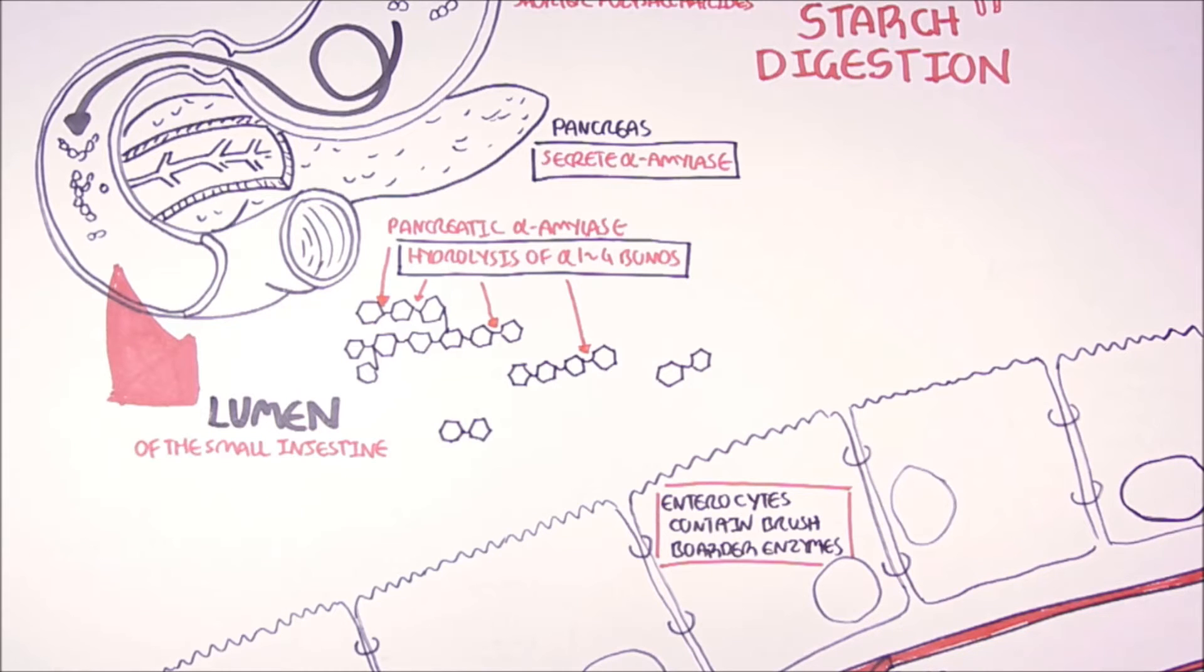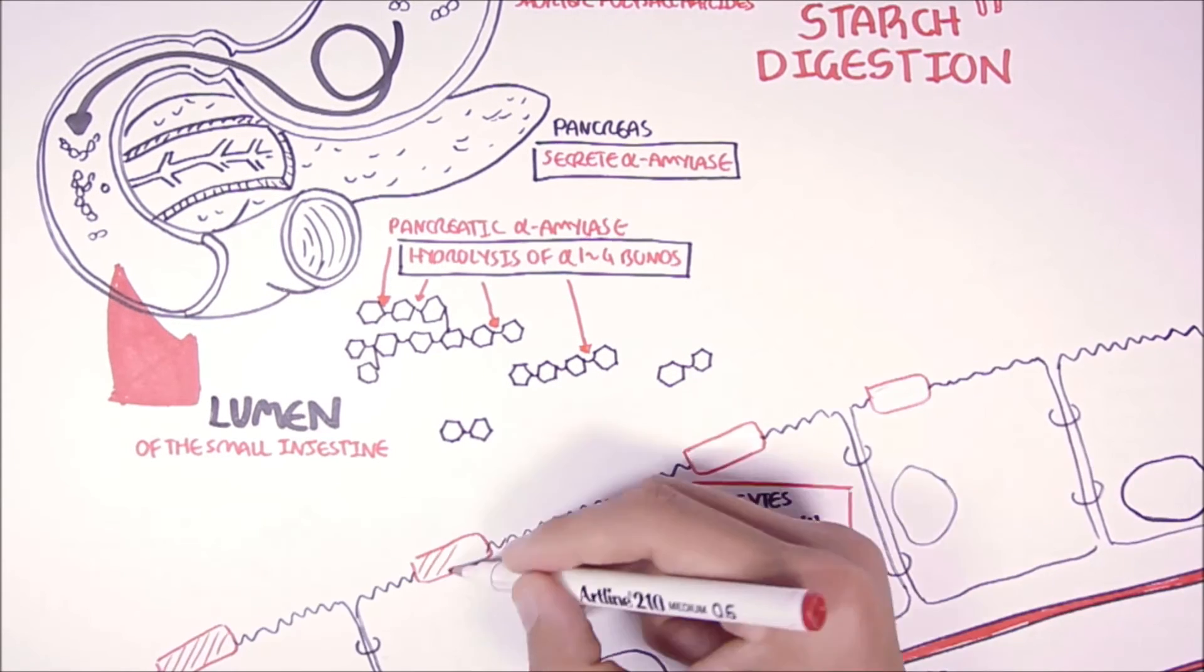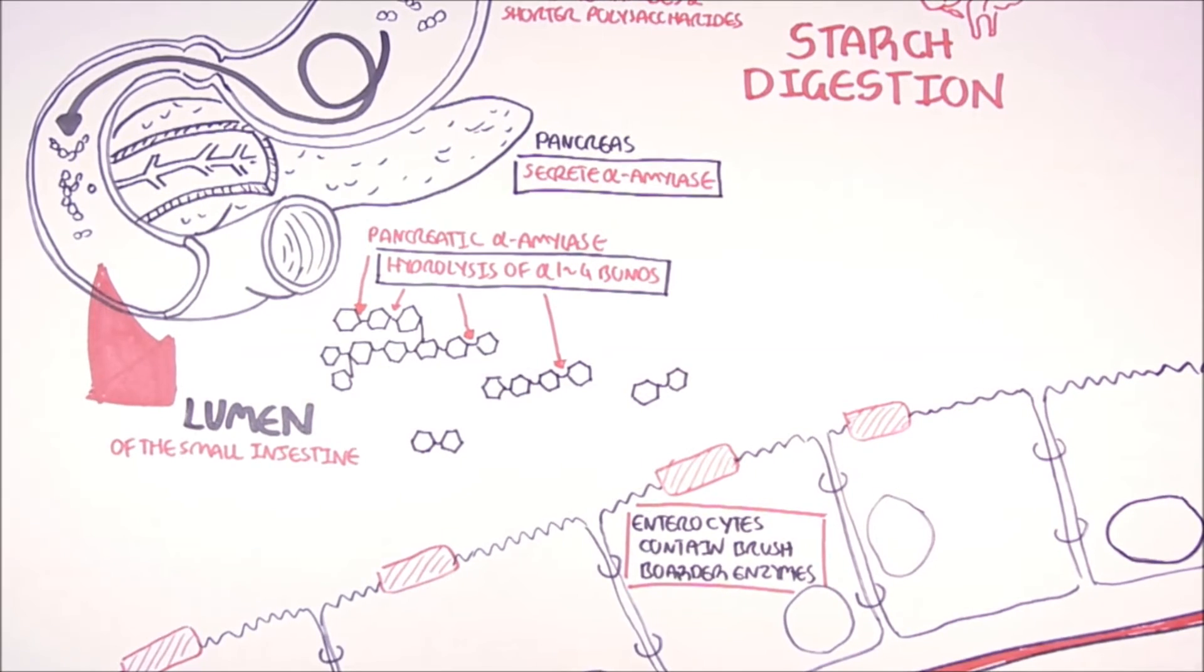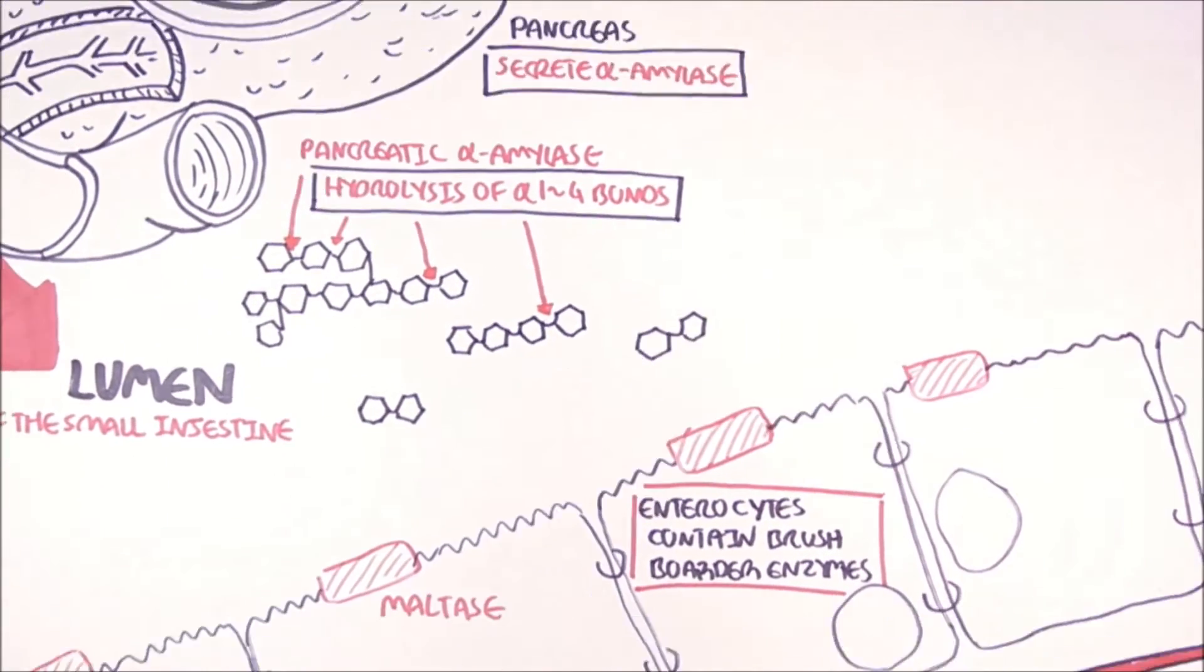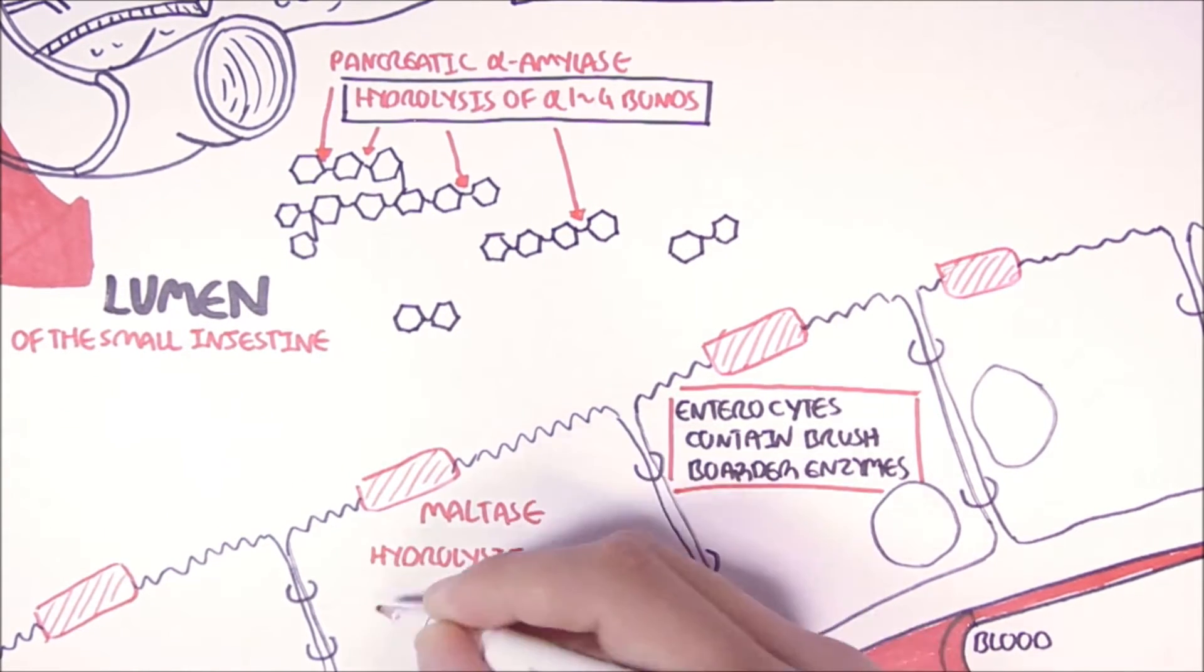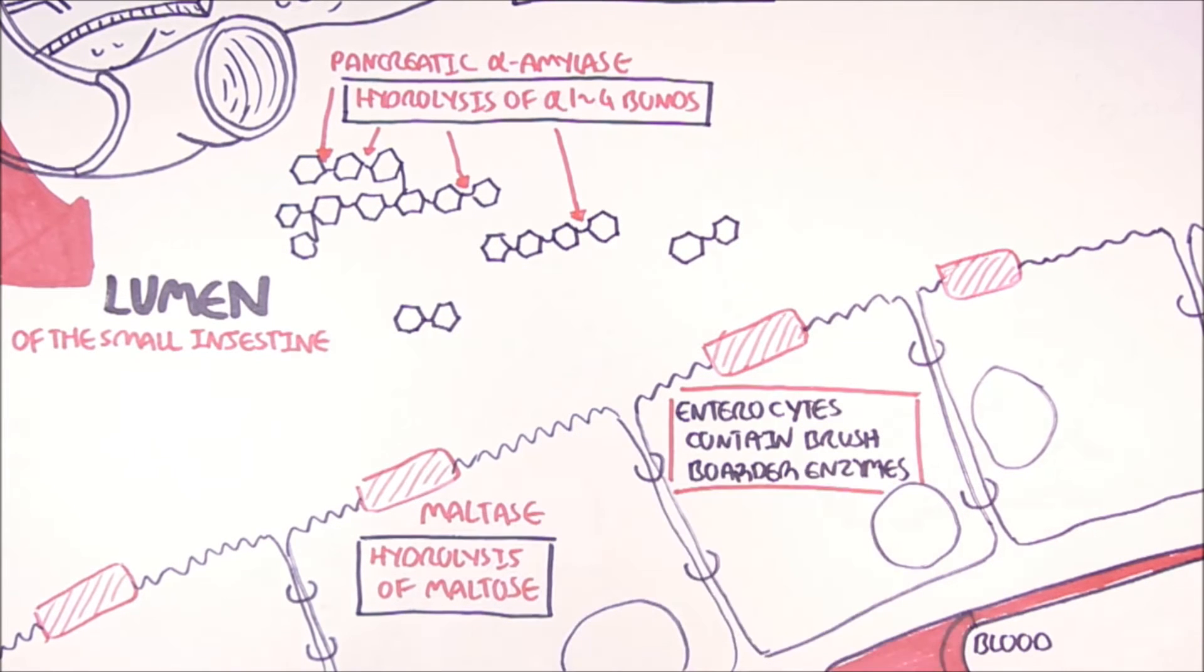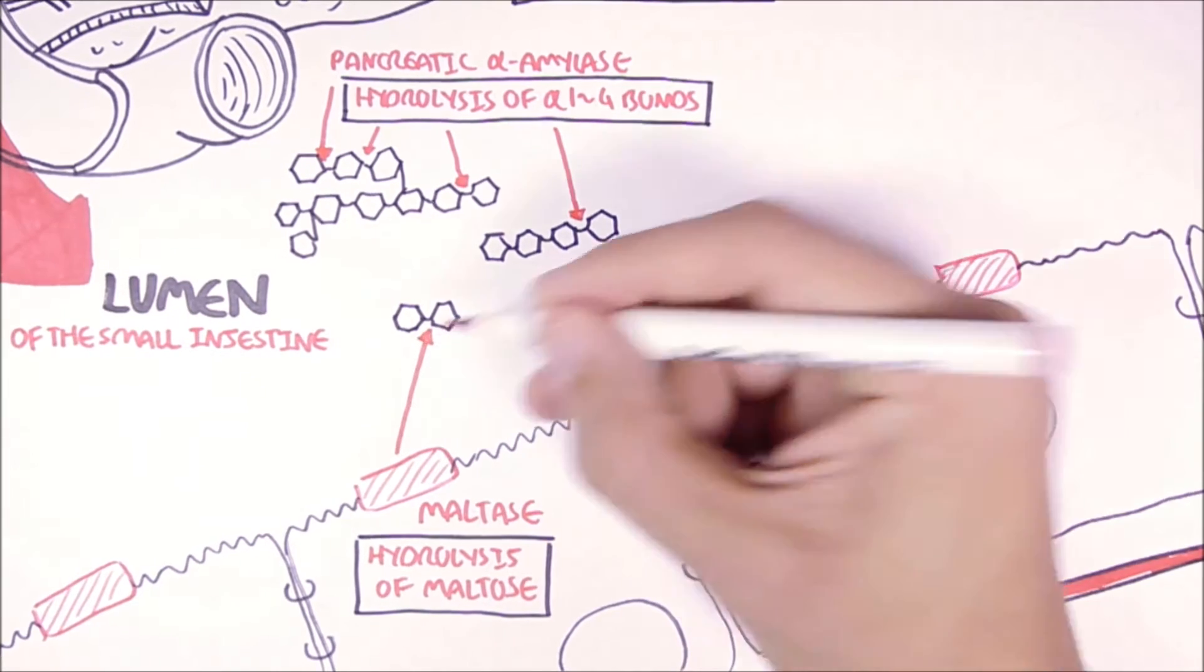The enterocytes, as I mentioned, also have enzymes called brush border enzymes that participate in the digestion of starch. These enzymes include maltase, which will hydrolyze maltose. Now maltose is essentially two glucose molecules linked together. So maltase will hydrolyze these.